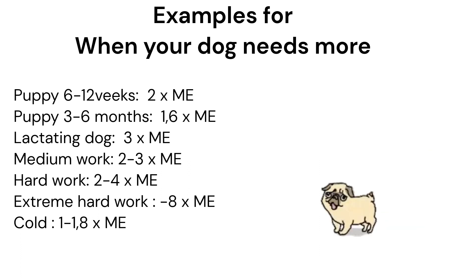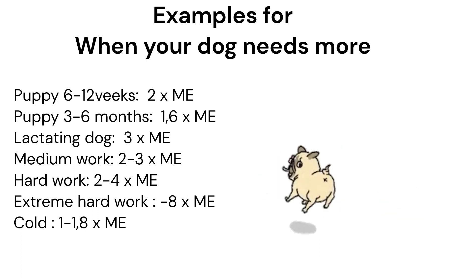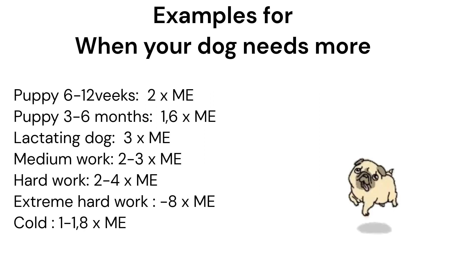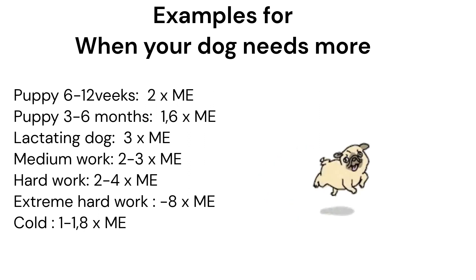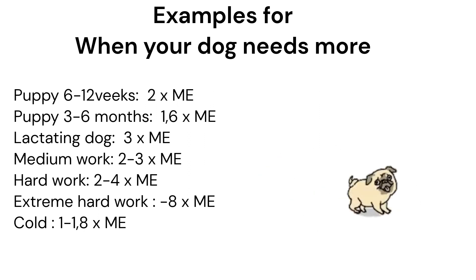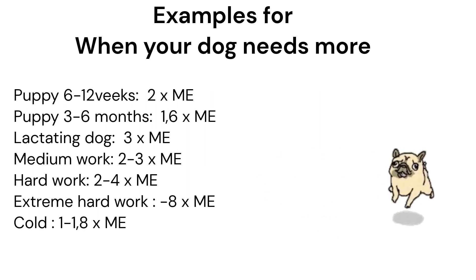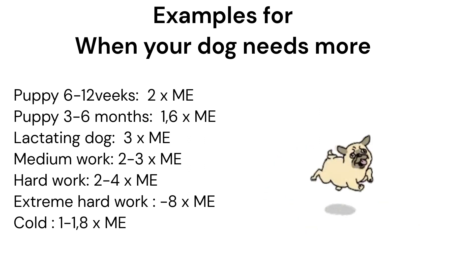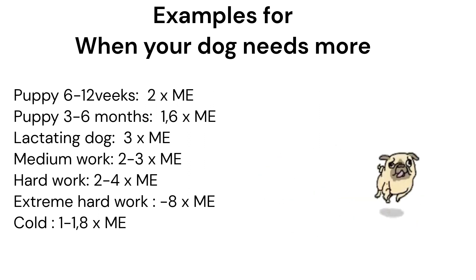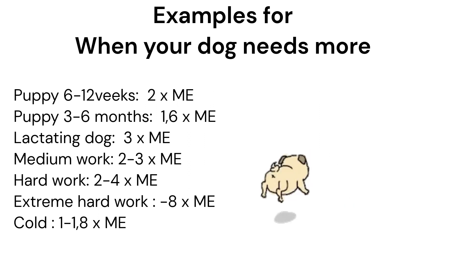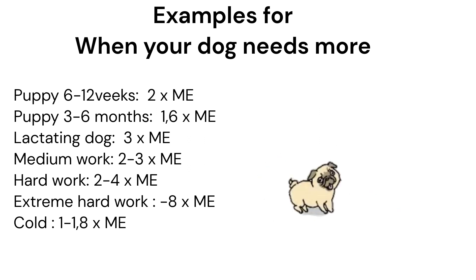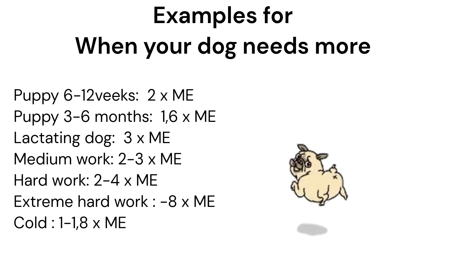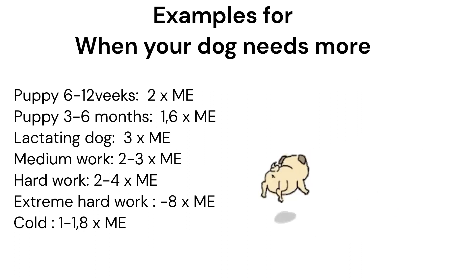I have put up some examples for when your dog needs more than the maintenance energy. For a puppy, for example, between the ages of 6 to 12 weeks, it needs double the amount of its maintenance needs. This is because of the rapid growing and developing, so it needs more energy to keep up with it.